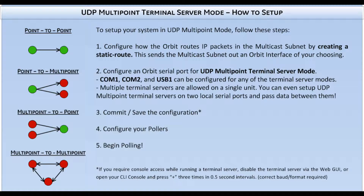Before we jump into configuring the Orbit, here's the list of steps we'll have to take. When a unit gets configured to use UDP in multipoint mode, it's going to start sending packets using the multicast subnet, as we discussed on the previous diagram. Where those packets get sent all depends on the Orbit's routing table. If you have a default gateway setup, then those multicast packets will be sent out the Orbit interface associated with that default gateway. If not, then this is where step 1 comes into play — you'll have to create a static route and define how the Orbit routes multicast packets.